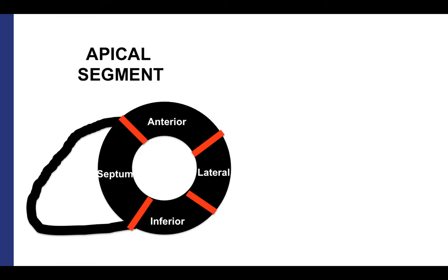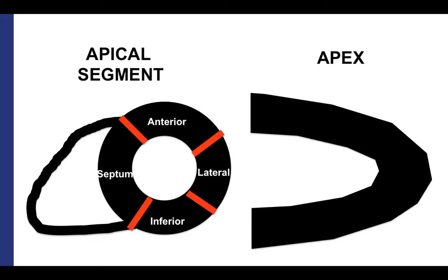The apical segment is divided into only four segments. Starting anterior and moving clockwise, these are the anterior, lateral, inferior, and septal segments. The true apex is the 17th segment.